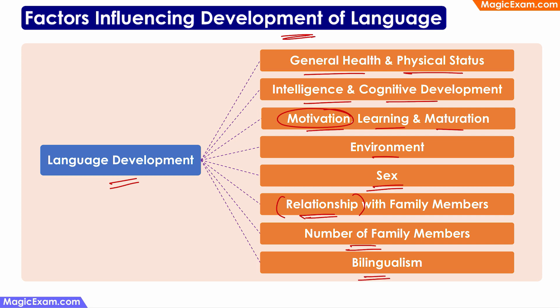Bilingualism is also a key factor because some research says that if children are exposed to multiple languages at home or outside when they are very young, then they tend to pick up languages very fast. So bilingualism is also a key factor in influencing the development of languages.